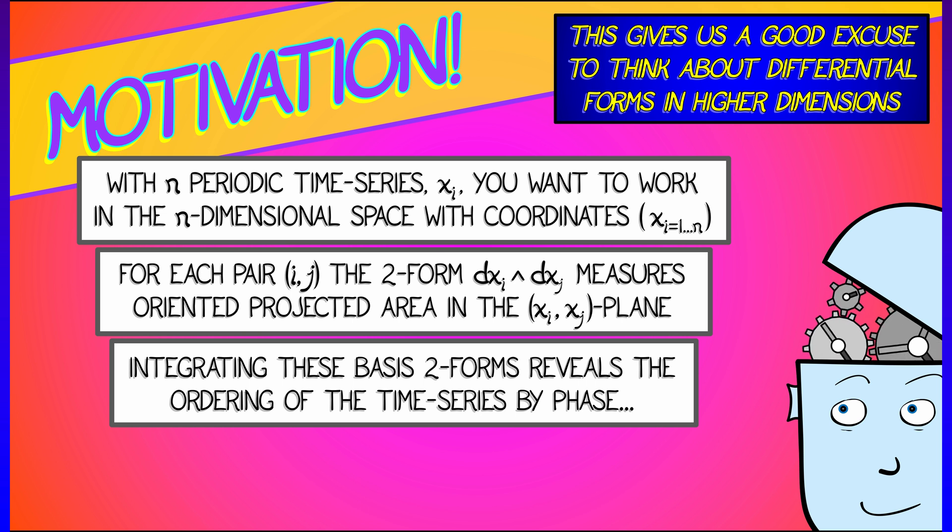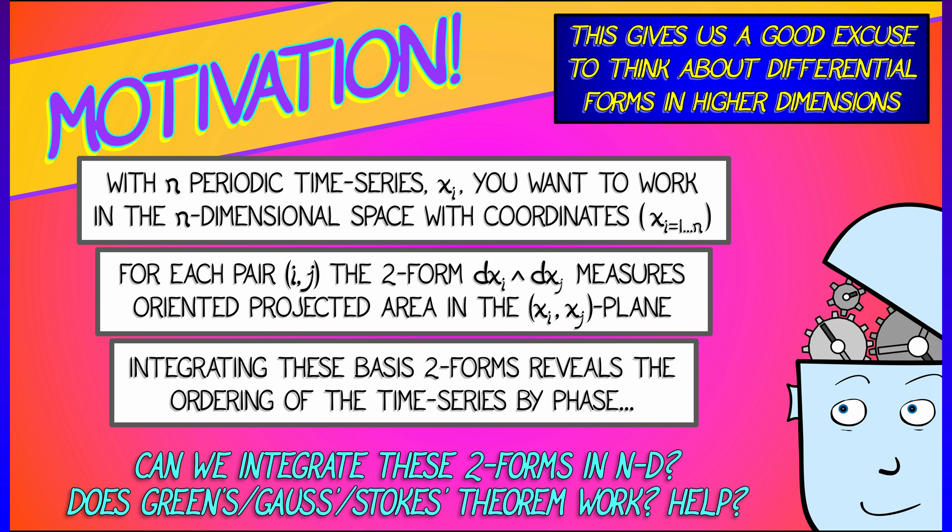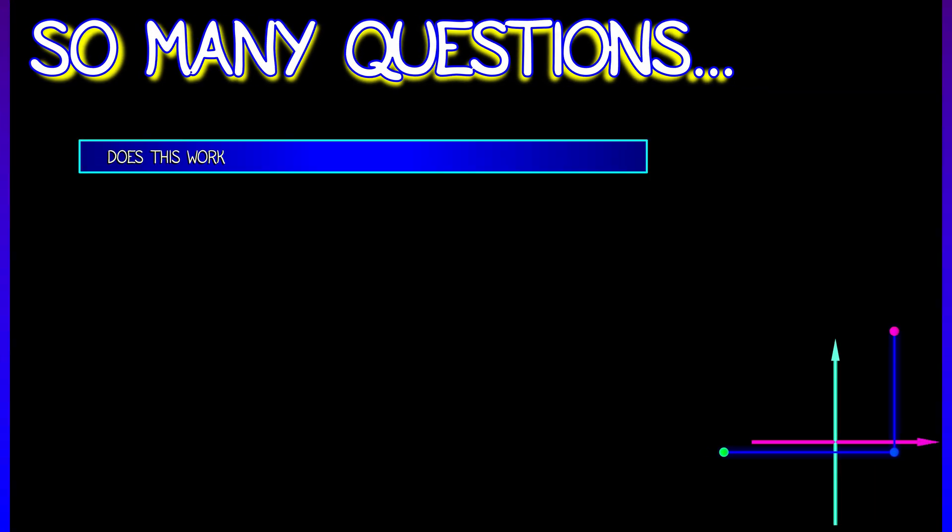Now, understanding that motivation raises a whole bunch of questions. Could we integrate these two forms in n dimensional space? Could we use something like Green's theorem, Gauss theorem, Stokes theorem, anything like that? Does that even work? Would it be helpful in this context? There are so many other questions.